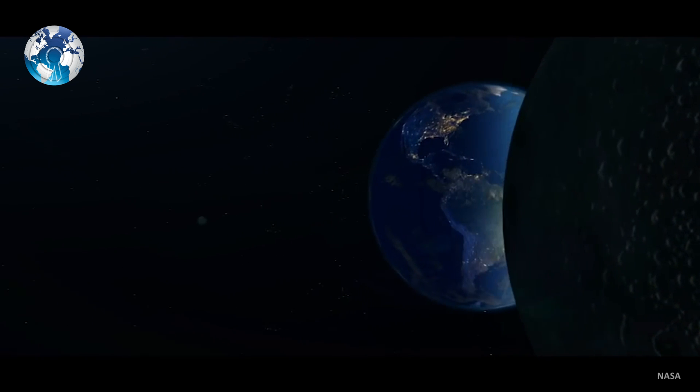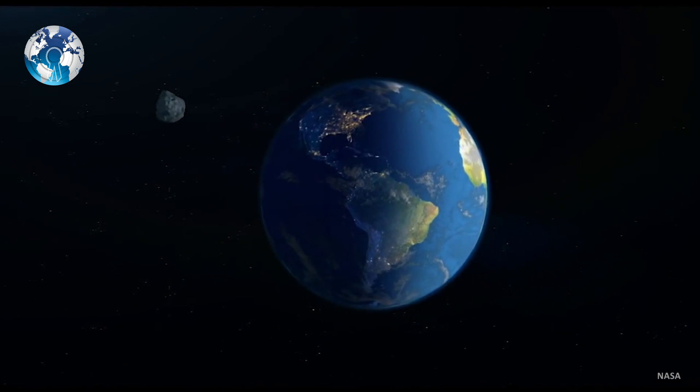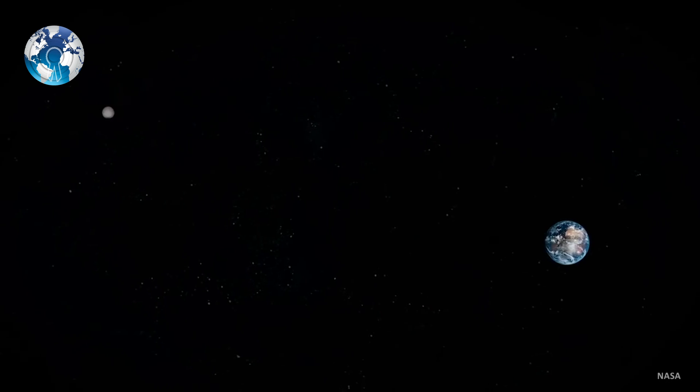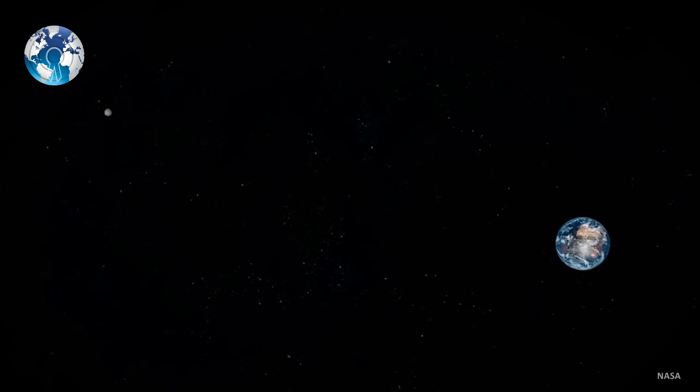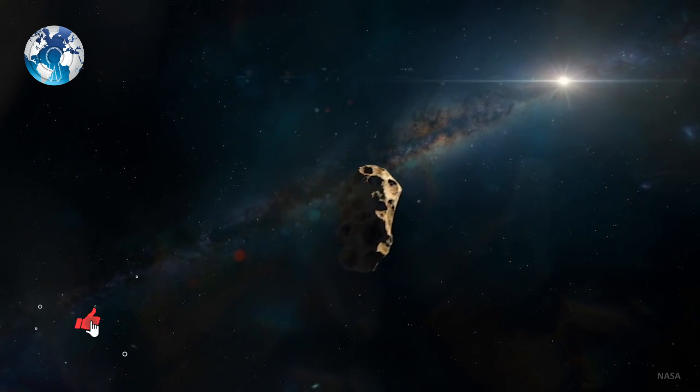According to Earthsky, the asteroid passed by at very close distance towards the Earth, recorded as around half the distance between the Earth and the Moon. It was closest to the planet around 9:28 pm Irish time, passing by Greenland and Canada.